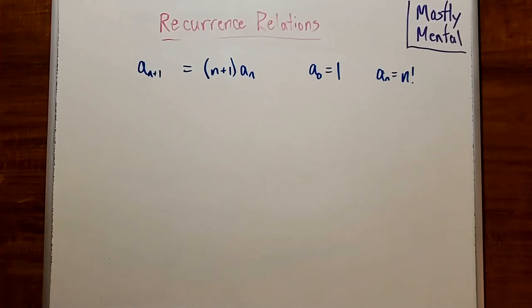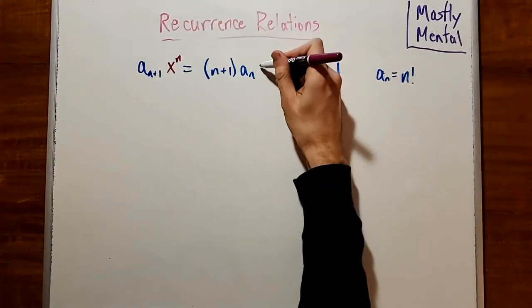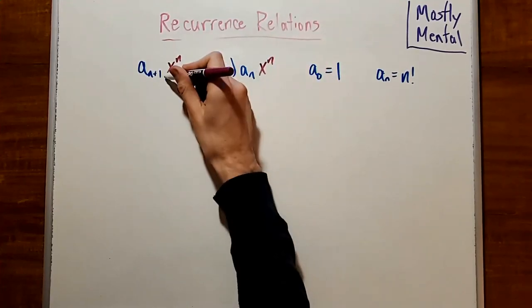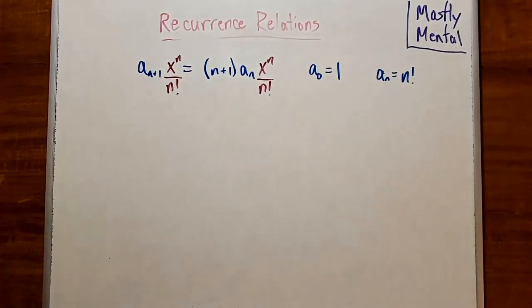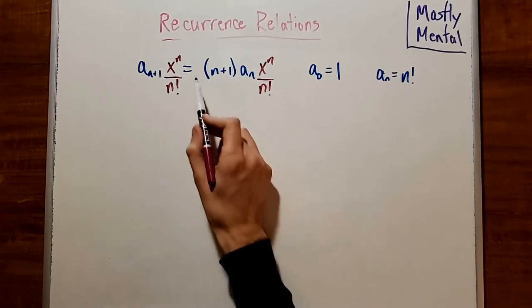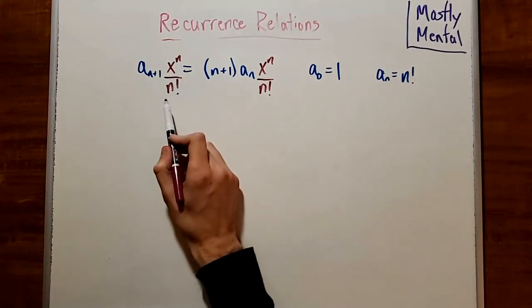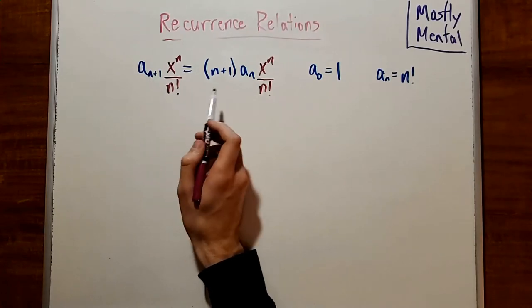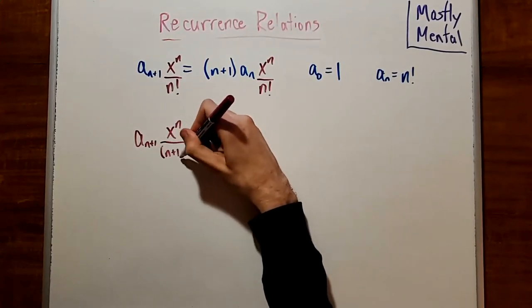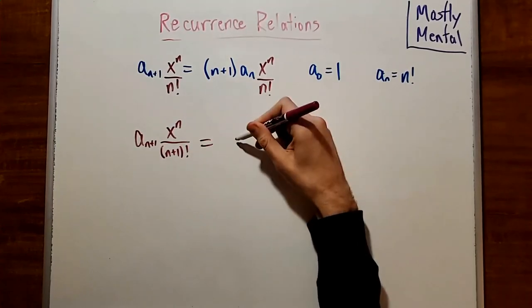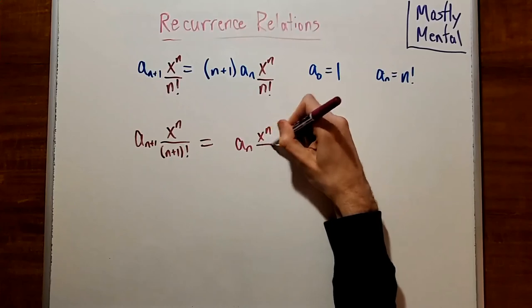We can try looking at it with ordinary generating functions, but that turns out to get a bit messy. Instead, this is a great time to try out exponential generating functions. So once again, we'll follow our recipe and multiply through by a power of x. And because we're looking at an exponential generating function, we're also going to want to divide by the corresponding factorial. And notice that we've got an n plus 1 in the numerator here and an n factorial in the denominator here. So those can combine to give us a_{n+1} times x^n over (n+1)! equals a_n x^n over n!.